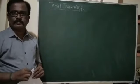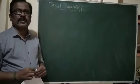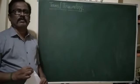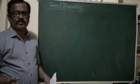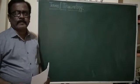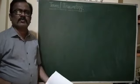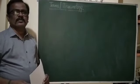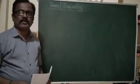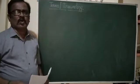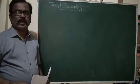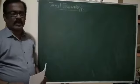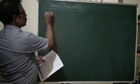Okay, dear students, in continuation with the terms and terminology used in Mendelian genetics and general genetics, in the previous session we came to know the definitions of gene, allele or allelomorph, locus or loci, and homozygous and heterozygous individuals. Now the next term is phenotype and genotype.